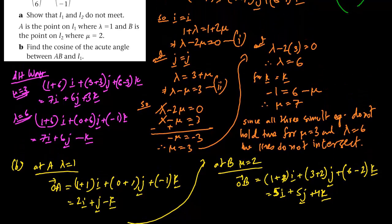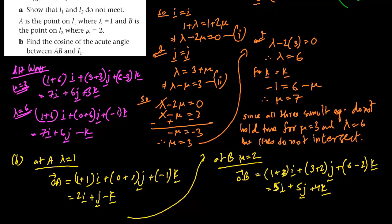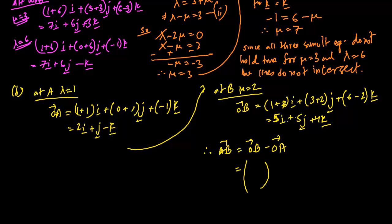We have to find the cosine of the acute angle between AB and line L1. First, find AB. By the position vector rule, AB = OB − OA. In column vector format: (5, 5, 4) − (2, 1, −1) = (3, 4, 5). So AB = 3i + 4j + 5k.